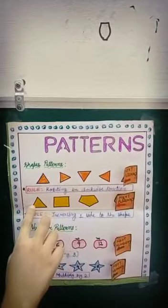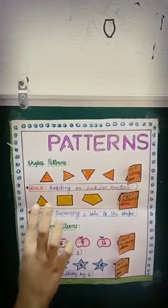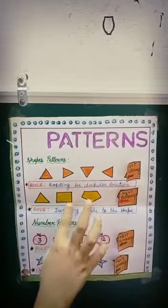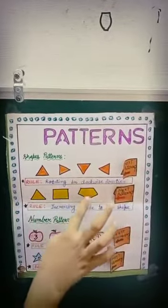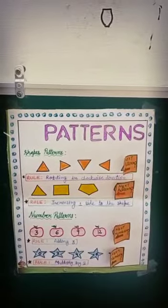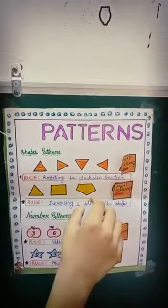Now, this triangle has three sides, this square has four sides, and this shape has five sides. So the pattern is increasing. One side is increasing in every shape.